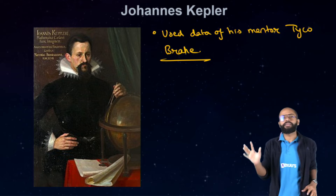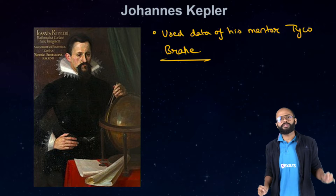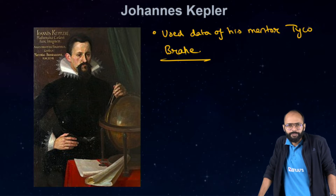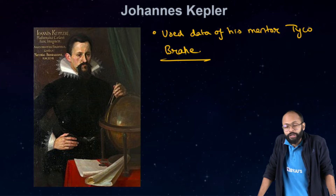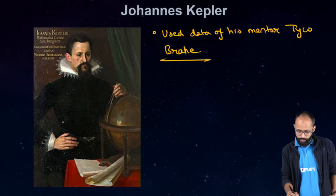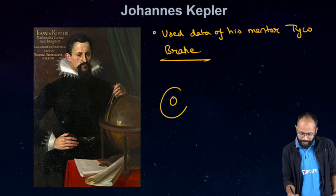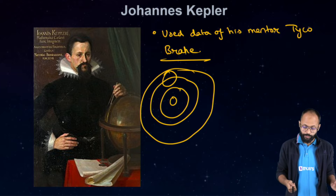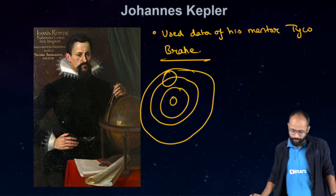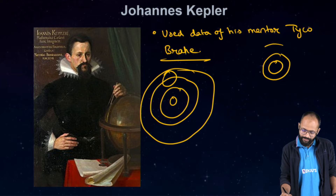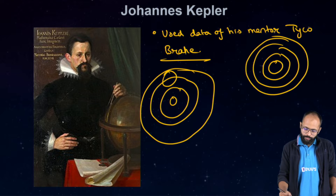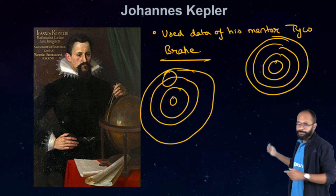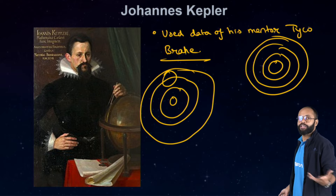Johannes Kepler analyzed Tycho Brahe's data and gave proper laws. There were two famous models: the geocentric model, where Earth is believed to be the center with everything revolving around it including the sun, and the heliocentric model, where the sun is at the center and everything moves around it in perfect circles.